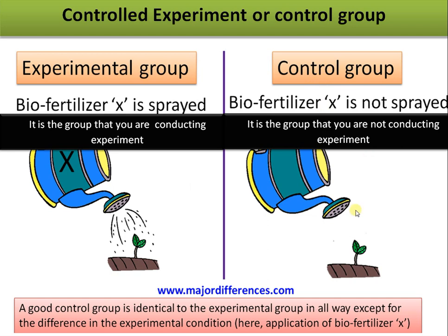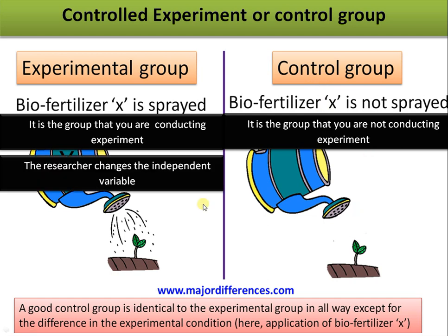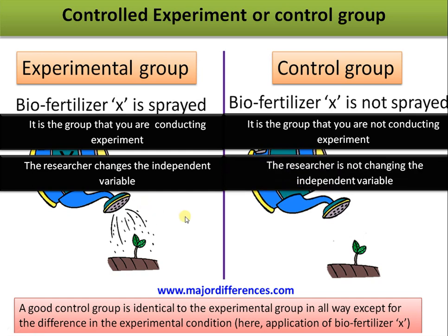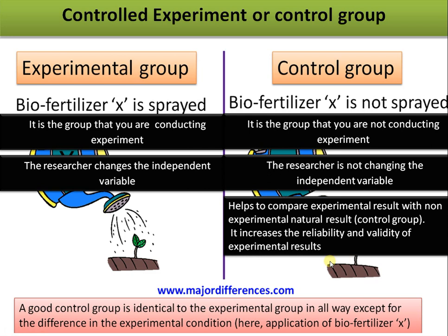In the experimental group we are conducting the experiment, whereas in the control group we are not — we are not adding the biofertilizer X. In the experimental group the researcher changes the independent variable, whereas in the control group the researcher does not change the independent variable. A control group helps to compare the experimental result with the natural or control result.